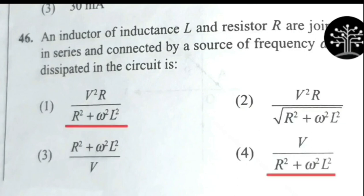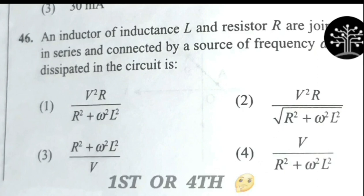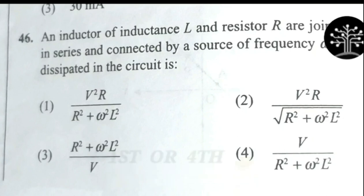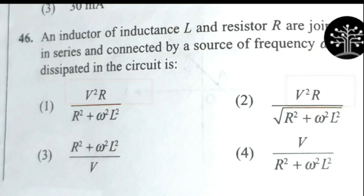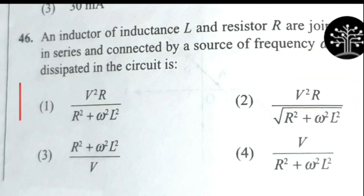Now we compare the options. Looking at the options, the third option can be ruled out. Check similarities among options. The first option and fourth option have similarity - both have R squared plus omega squared into L squared in the denominator, where omega is angular frequency in radians. So the correct answer is either first or fourth option. We take help from other options: the second option shows V squared R, which supports the first option. So among first and fourth option, first option is being supported, giving more chances it is the answer. Therefore we conclude the answer should be first option: V squared R by R squared plus omega squared L squared.